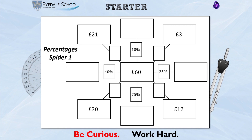To find 10% of a number you divide by 10, so that would be 6 pounds. And whilst I'm here — if 10% is 6 pounds, then 3 pounds, which is half of 6 pounds, must be 5%. To find 25% you halve the number and halve it again: half of 60 is 30, half of 30 is 15. And since 30 pounds is there, that must be 50%.